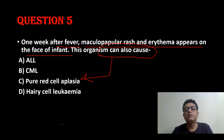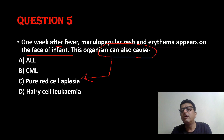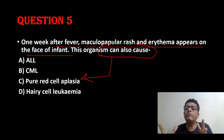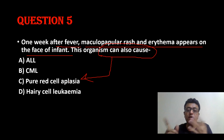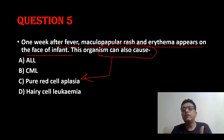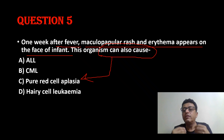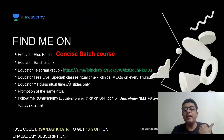Coming back to the question: rash on the face is parvovirus B19 — slapped cheek appearance — and it also causes pure red cell aplasia. This is the purpose of this class. We covered measles, roseola infantum, fifth disease, sixth disease. For chickenpox: same day rash. Fourth day rash with fever rising is measles; fourth day rash with fever disappearing is roseola infantum. GBS can be caused by Campylobacter jejuni. Also remember infectious agents for bronchiolitis (RSV), epiglottitis (H. influenzae), and acute LTB (parainfluenza virus).